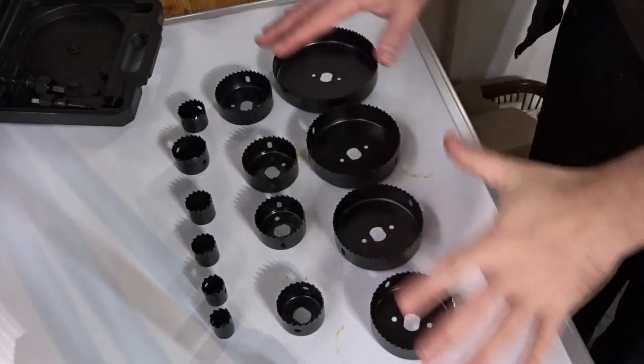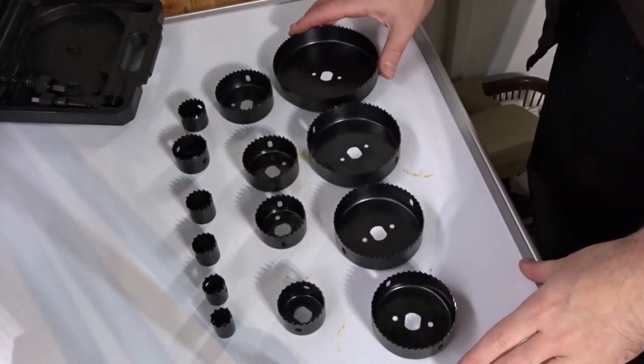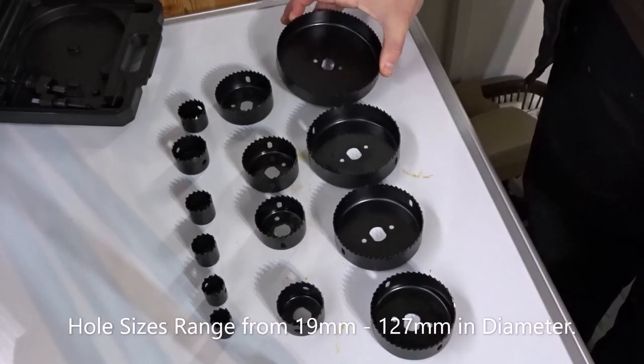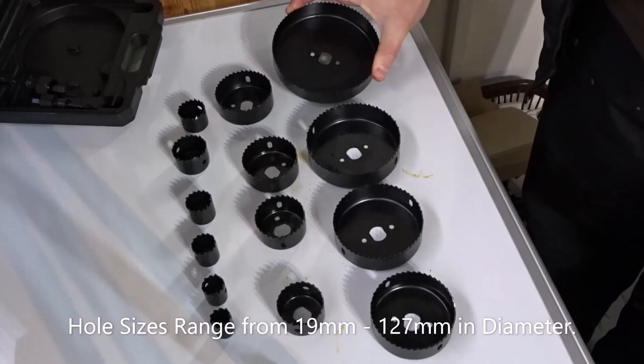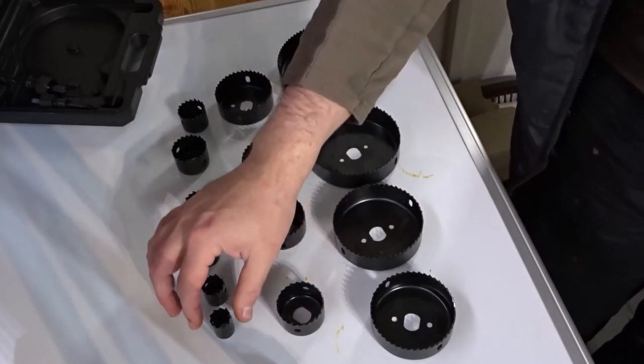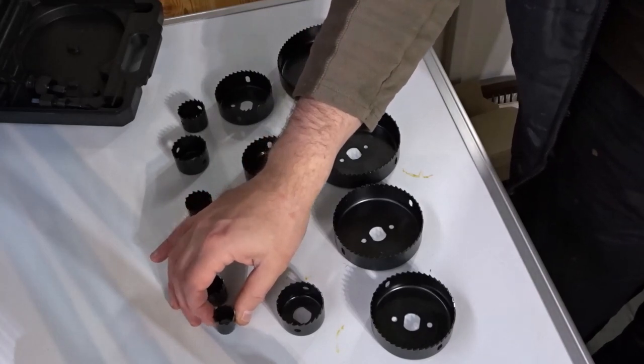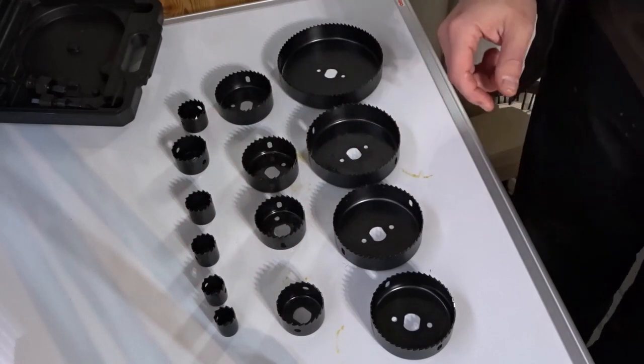Here are all the hole saws that you get. Going up to the biggest one, we have a 5 inch or 127 millimeter attachment, and then going down to the smallest one, this one is about 19 millimeters or three-quarters of an inch.